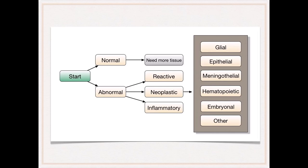A simple diagnostic approach: first decide if the tissue is normal or abnormal — sometimes you'll get tissue where they miss the lesion. If abnormal, decide whether it's reactive, neoplastic, or inflammatory. The vast majority of specimens are neoplastic; then subtype into glial, epithelial (or epithelioid, since not everything that looks epithelial is epithelial — e.g., melanoma), meningothelial, hematopoietic, embryonal, or other.